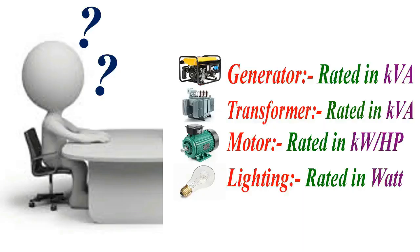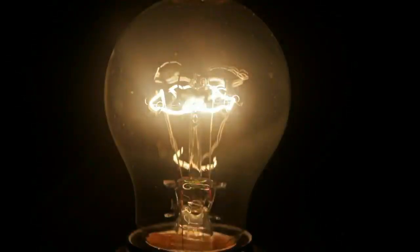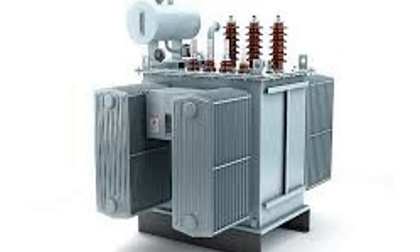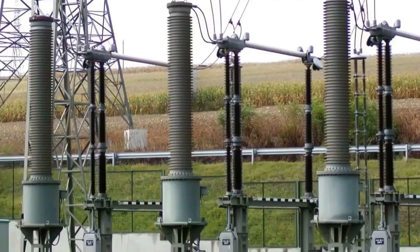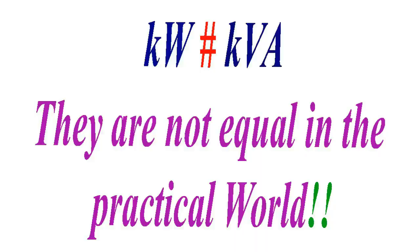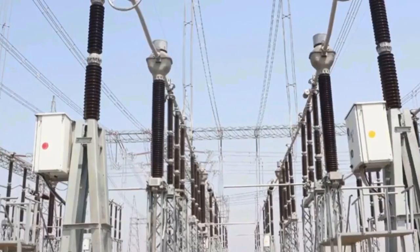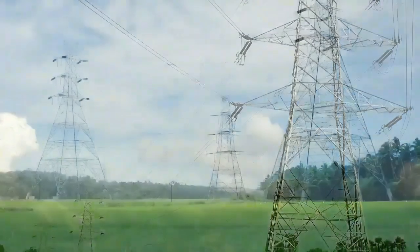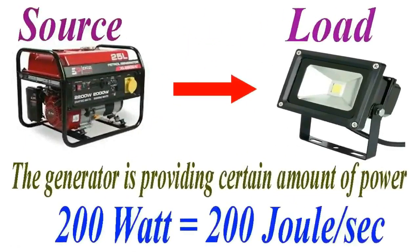Have you ever wondered why a lot of equipment in electrical systems is rated in KW and some others are rated in KVA? Like if you look at light bulbs, they are rated in watts, and if you look at transformers, they are rated in volt-amps. A lot of people think KW and KVA are equal, but they are not equal in the practical world, and it's important to understand why. Power is specifically the rate of something — over a time there is a certain amount of energy being transferred from a generator providing a certain amount of power.